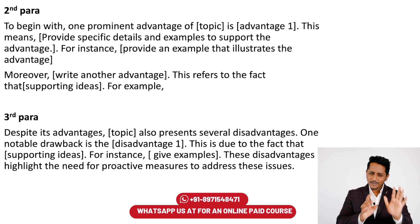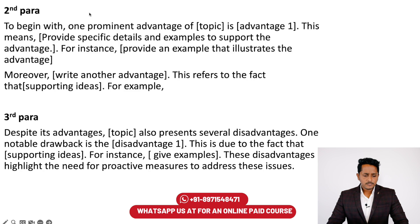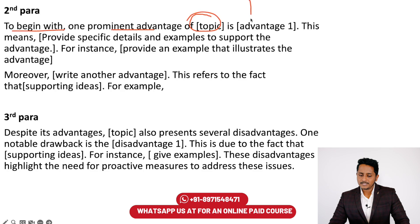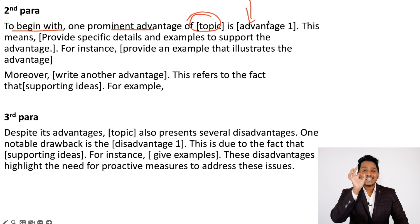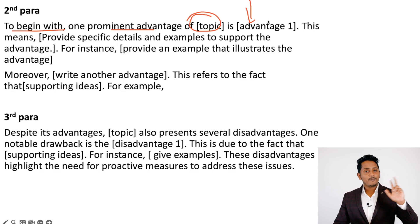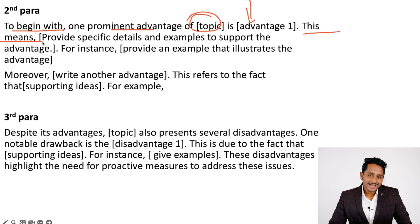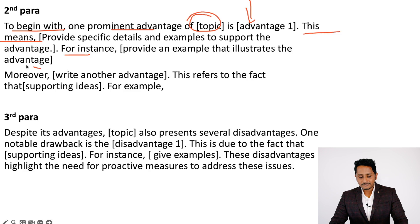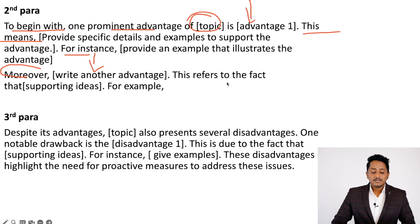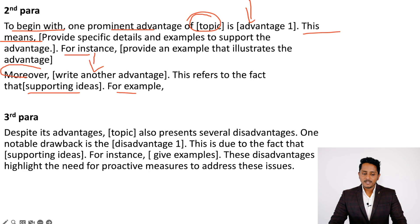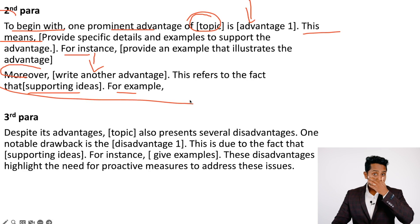To start the second paragraph: 'To begin with, one prominent advantage of [topic] is [write the first advantage in a simple sentence].' Then write a supporting idea: 'This means [supporting detail]. For instance, [give an example].' Then add another advantage: 'Moreover, [write one more advantage]. This refers to the fact that [supporting idea]. For example, [example].' That concludes the second paragraph template.